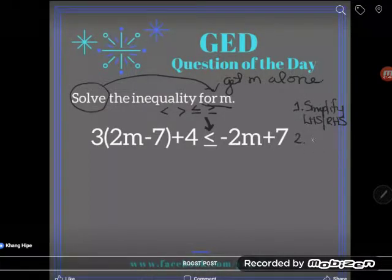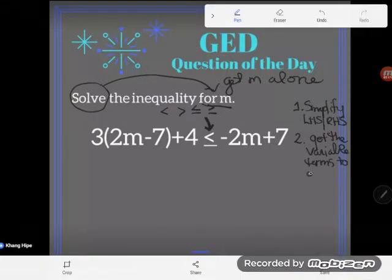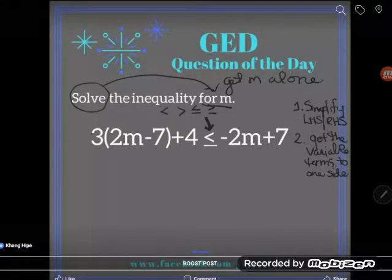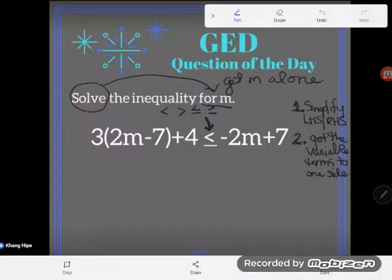Second thing is get the variable terms to the same side. That's always a good rule of thumb. You want all the letters on one side. On an inequality, I like to get them to the left. Do I have to get them to the left? No, but it's usually easier for students to understand when the letter's on the left. So we'll try to do that.